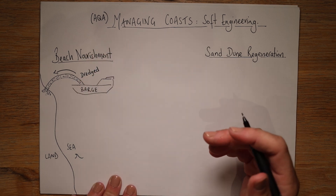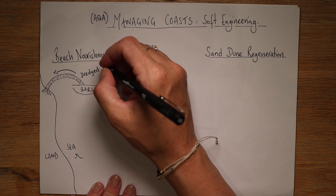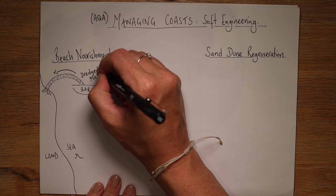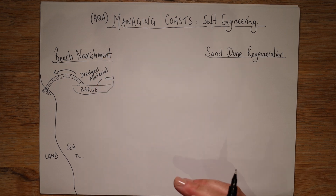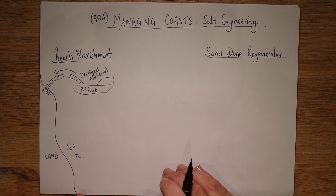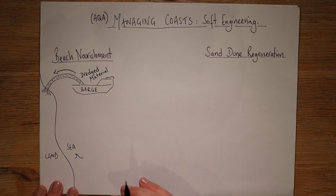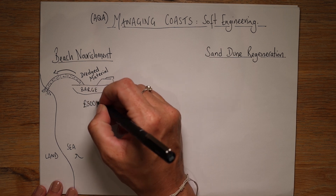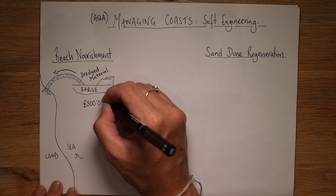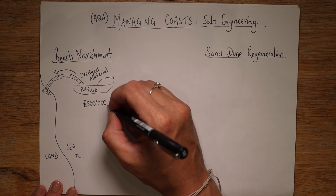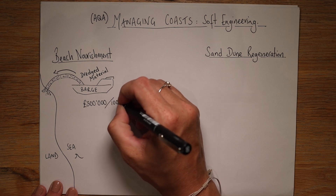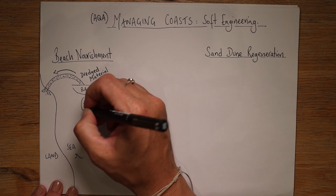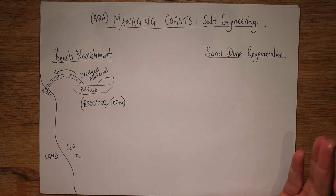You'll have come across the word 'dredged' before, possibly in rivers when they look at dredging rivers to make them deeper. It's exactly the same with coasts — they dredge the material from harbours or out on the shallow seas. It's not too expensive considering how much hard engineering methods are. It is approximately half a million pounds, or £500,000 per 100 metres — and that is adding a huge amount of sand and shingle to the beach.